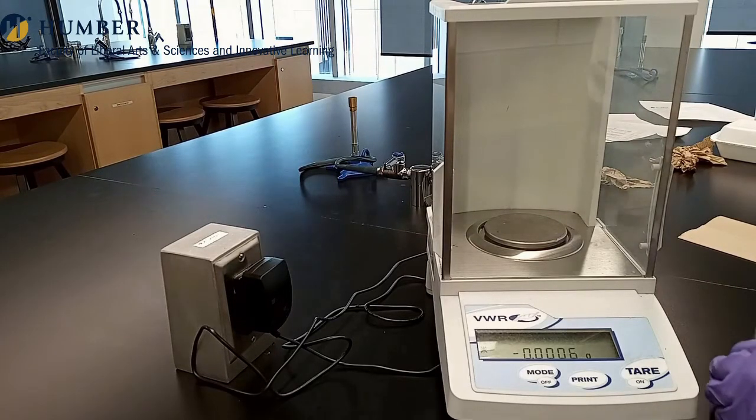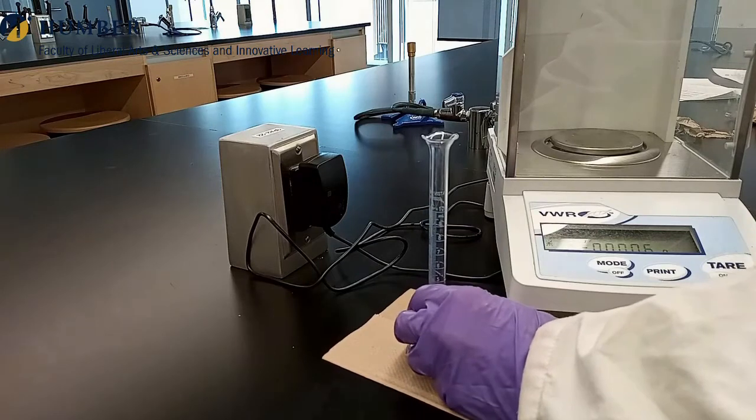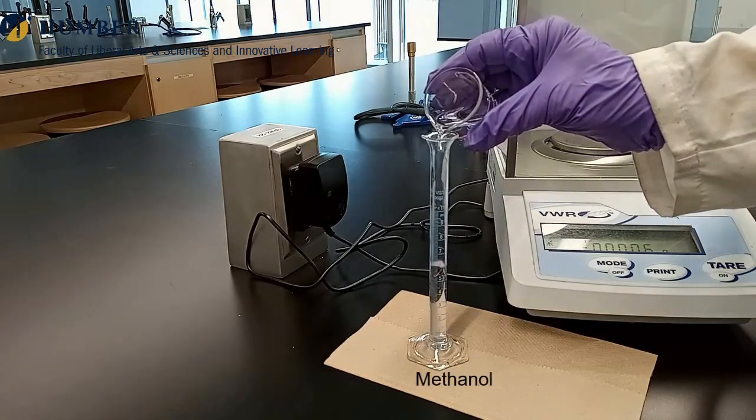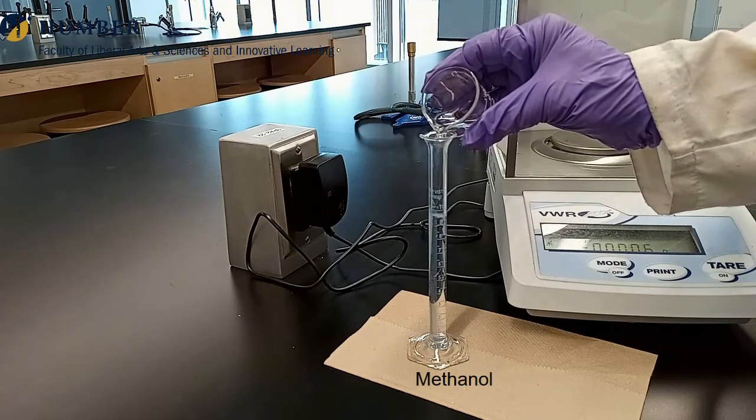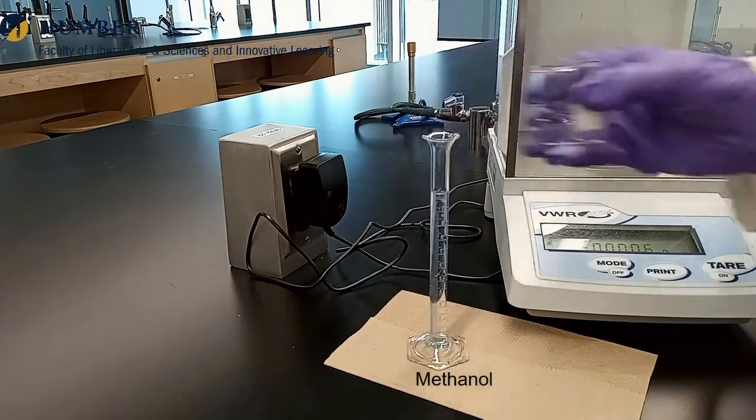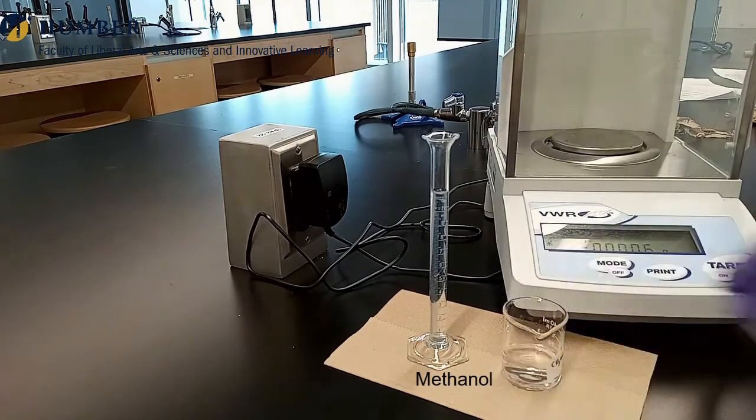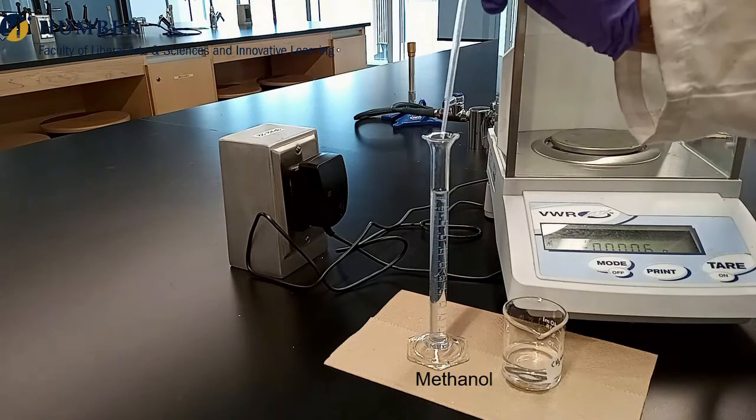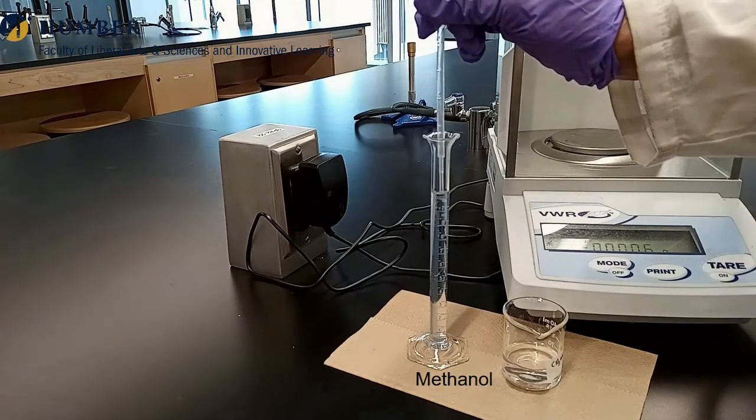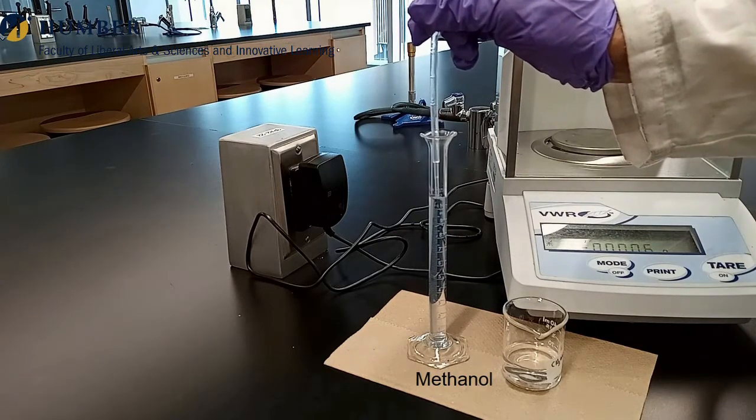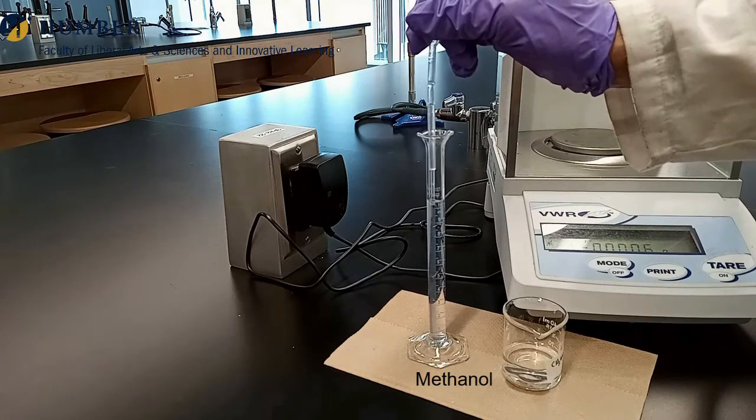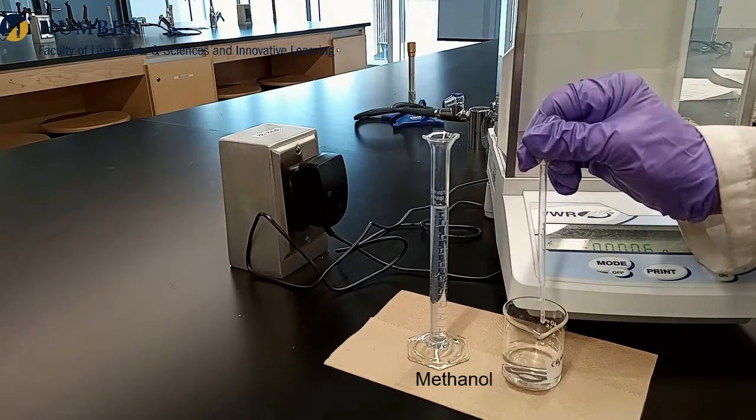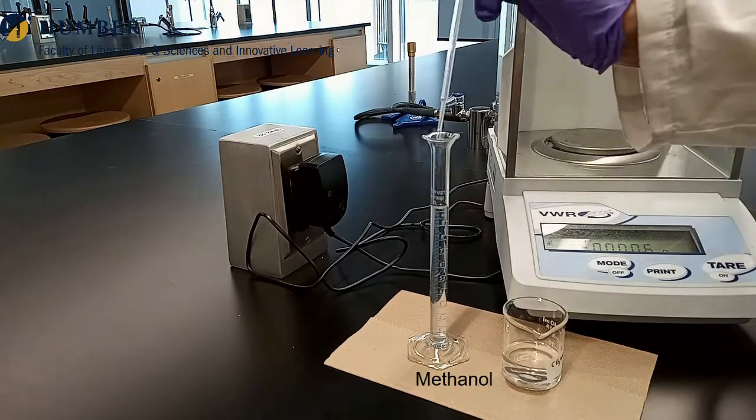Fill the measuring cylinder exactly to the 10 ml mark with sample A. Record this mass as m2 for sample A in the data table.